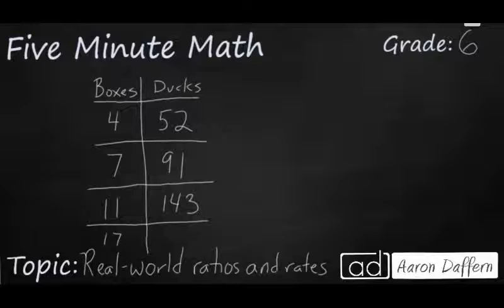Sometimes we'll even see ratios and rates in an input-output table. You see here we have a table showing how many ducks we have in a certain number of boxes. Each box has the same number of ducks. So 4 boxes get you 52 ducks, 7 boxes get you 91, 11 boxes get you 143 ducks. The question is, how many ducks will you have in 17 boxes?